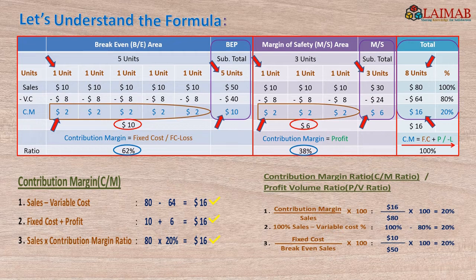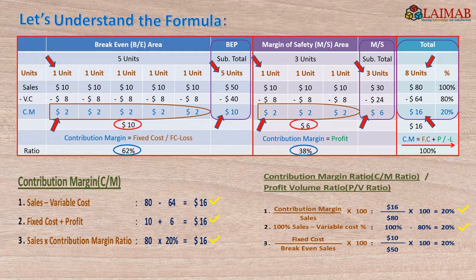On the other side, contribution margin ratio — also called the profit volume ratio, or PV ratio. First: contribution margin $16 divided by sales $80 creates 20% contribution margin ratio. Second: 100% sales minus 80% variable cost ratio equals 20% contribution margin ratio. Third: fixed cost $10 divided by breakeven sales amount $50 — since fixed cost and contribution margin are equal at the breakeven point — also creates a result of 20% contribution margin ratio.